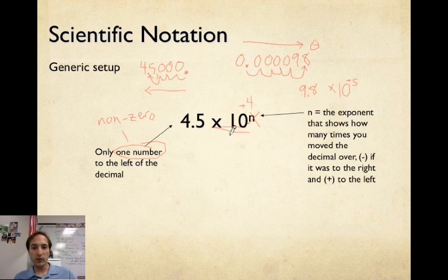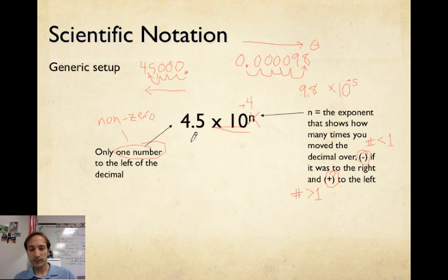So there's different ways of remembering this. My trick was always that it's going to be a negative exponent if the number that you are reducing or putting into scientific notation is less than one. If it's a really big number, like in the case of 45,000, so basically the number is greater than one, then it will be positive. Meaning the exponent will be positive, like this one.